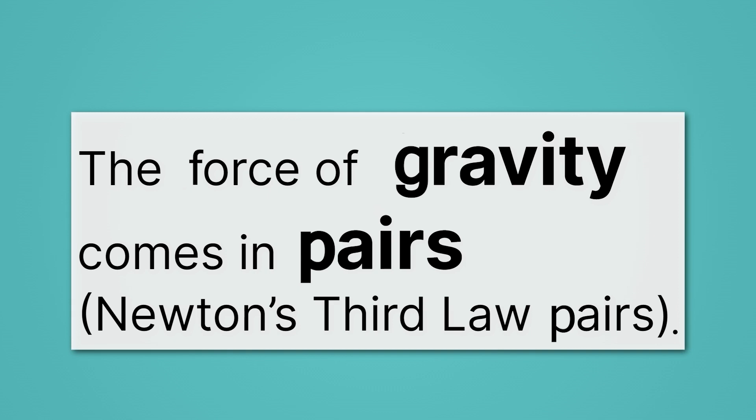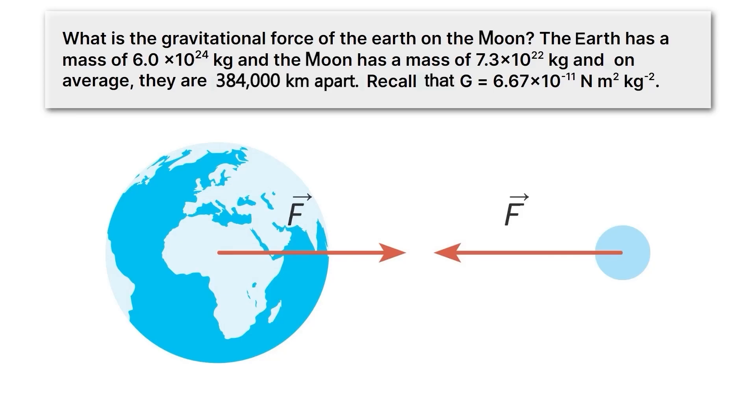Alright, so that's a lot about gravity. Let's actually turn to a practice problem where we calculate the gravitational force. This says, what is the gravitational force of the Earth on the Moon? So we're calculating basically the magnitude of those arrows. The answer we get will apply to both of them because they're equal in size. Anyway, the Earth has a mass of 6.0 times 10 to the 24th kilograms.